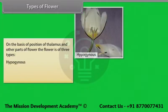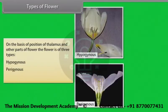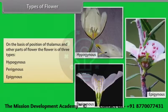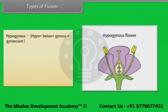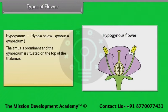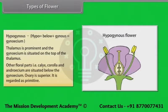The three types are: Hypogynous, Perigynous, and Epigynous. In a Hypogynous flower, the thalamus is prominent and the gynoecium is situated on the top of the thalamus. Other floral parts — calyx, corolla and androecium — are situated below the gynoecium. The ovary is superior. It is regarded as primitive.